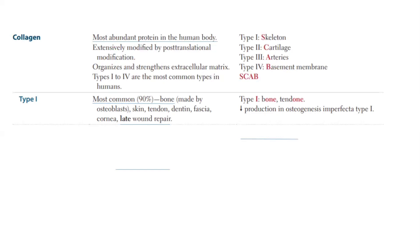Another way the examiner may question this: if Type 1 collagen is absent or deficient, what disease will we see in patients? Since skin and bones are mostly made of Type 1 collagen, if it is decreased, the patients will suffer from Osteogenesis Imperfecta Type 1. It is an autosomal dominant disorder seen in patients suffering from Type 1 collagen deficiency.